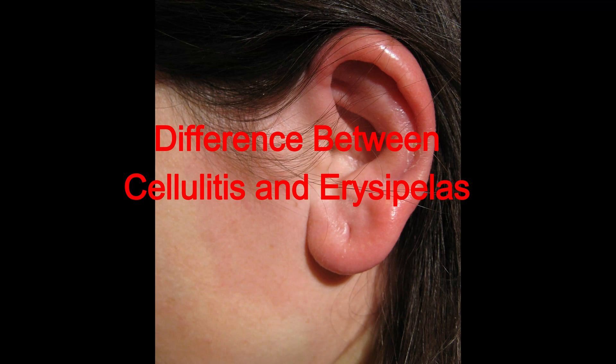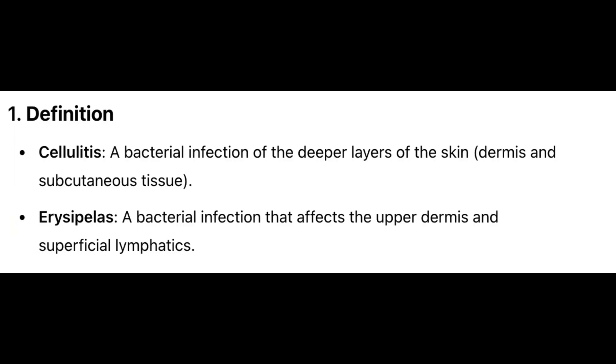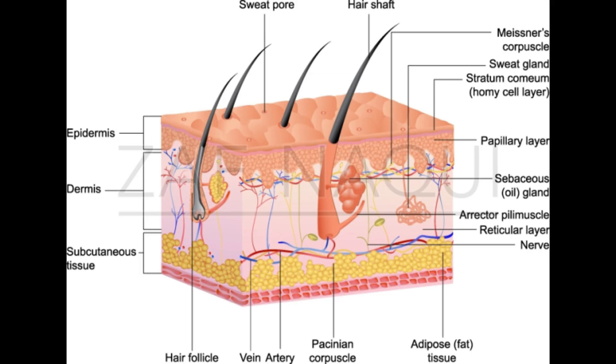Here are 12 key differences between cellulitis and erysipelas. One, definition. Cellulitis is a bacterial infection of the deeper layers of the skin, dermis, and subcutaneous tissue. Erysipelas is a bacterial infection that affects the upper dermis and superficial lymphatics.